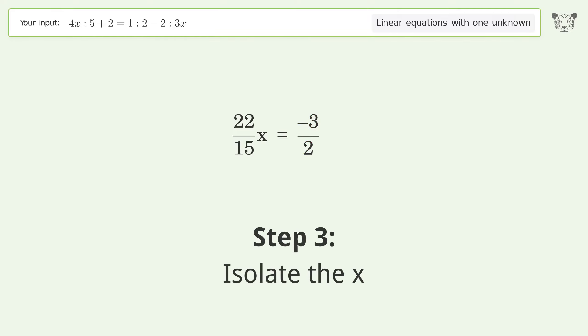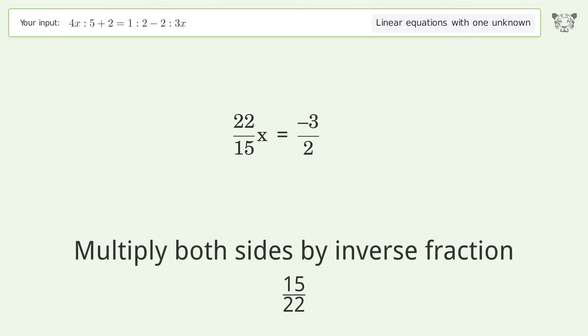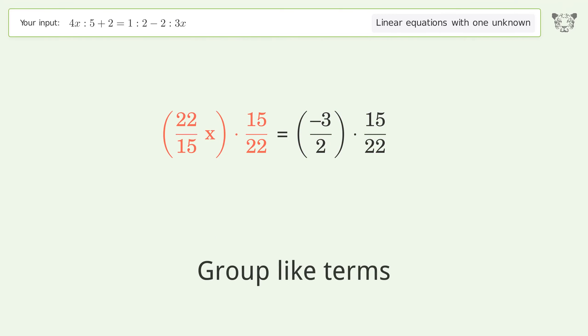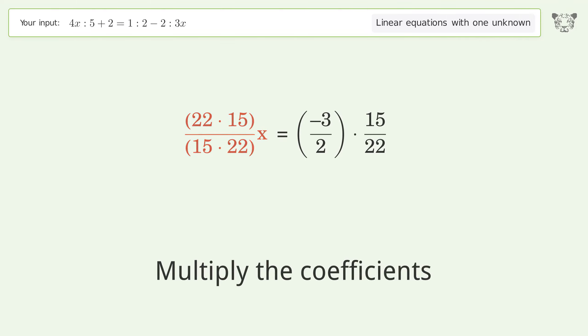Isolate the x. Multiply both sides by inverse fraction 15 over 22. Group like terms. Multiply the coefficients. Simplify the coefficients.